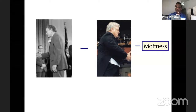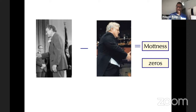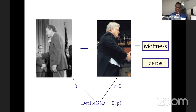The question I asked is: can you delineate that in a quantitative way? It turns out you can. The quantity that discerns the difference between them is the determinant of the real part of the Green's function. For Laughlin, this is entirely non-zero; for Anderson, this is equal to zero.